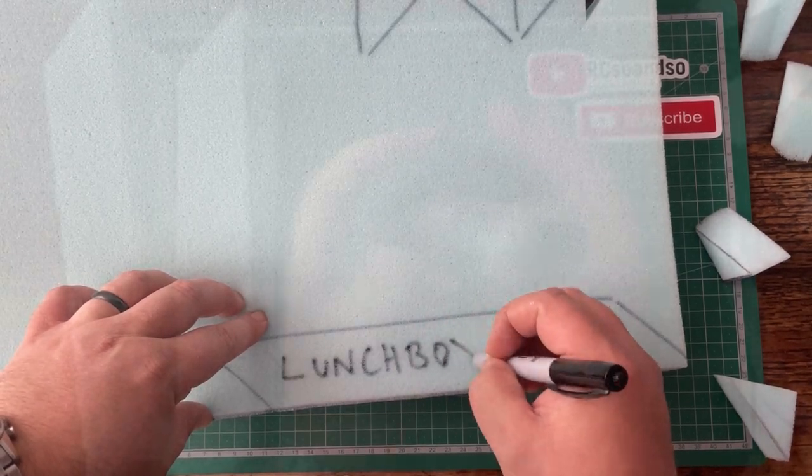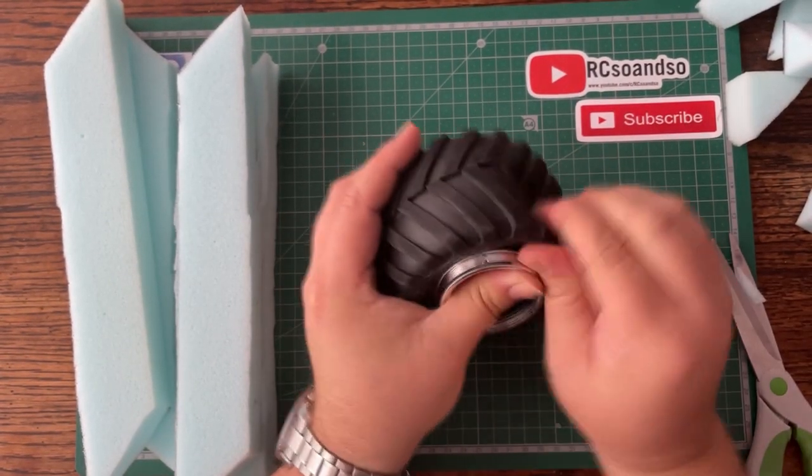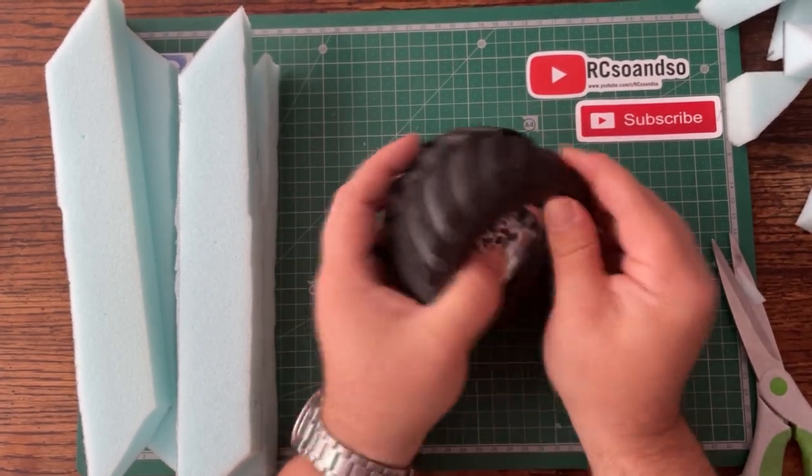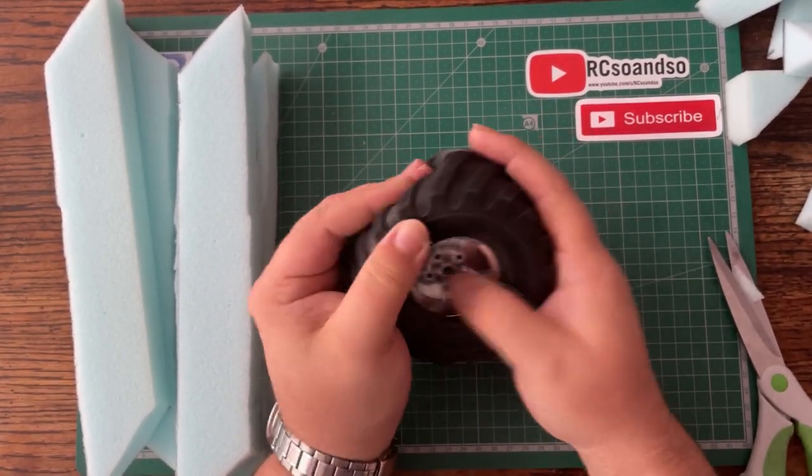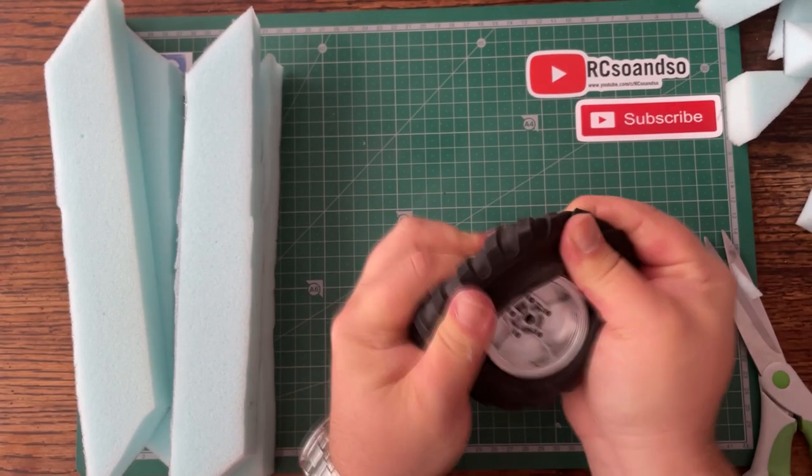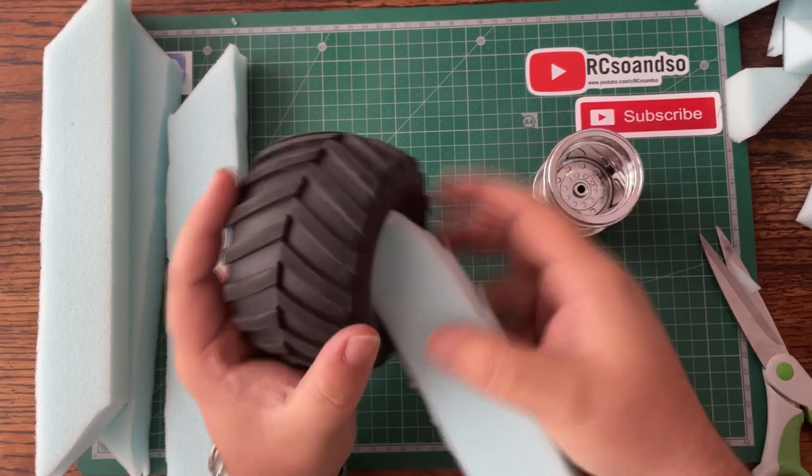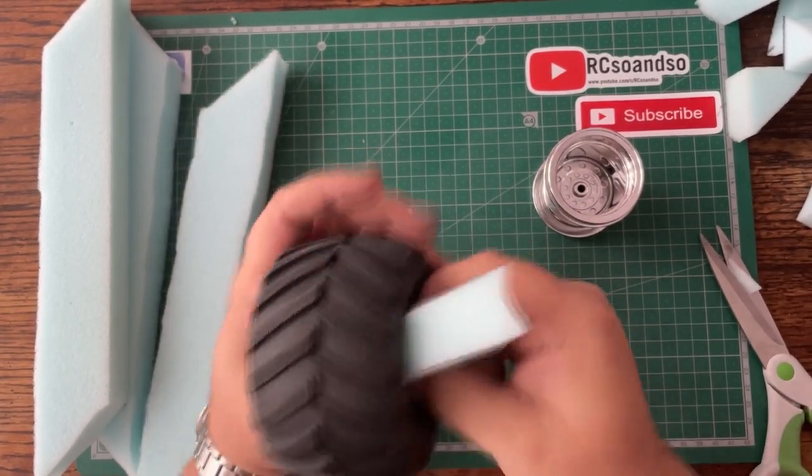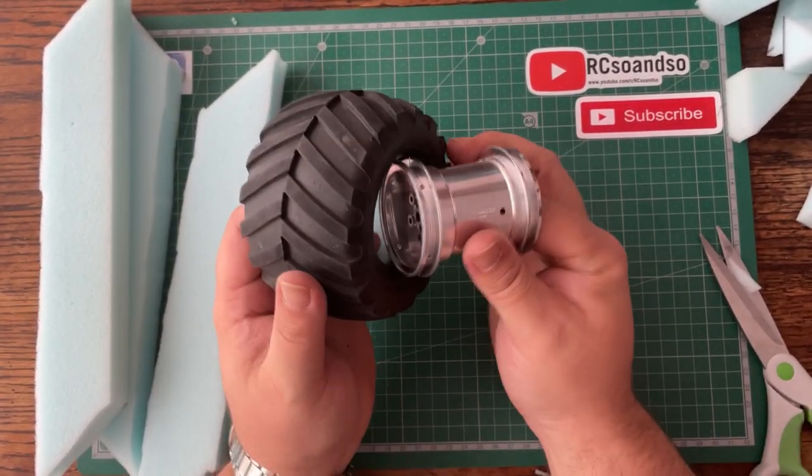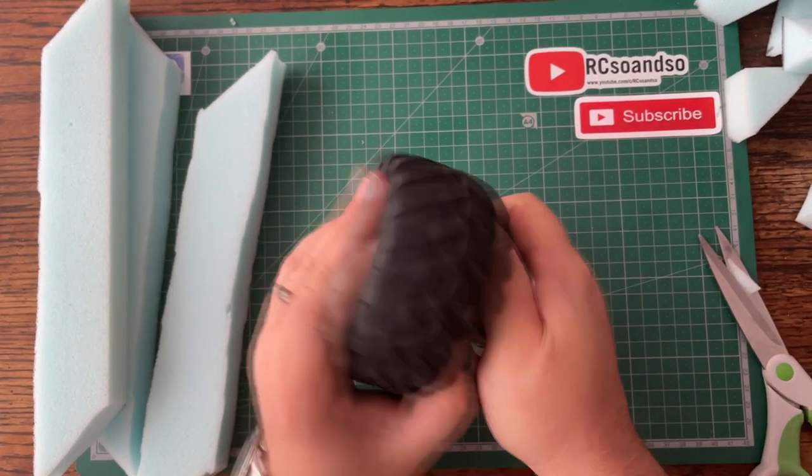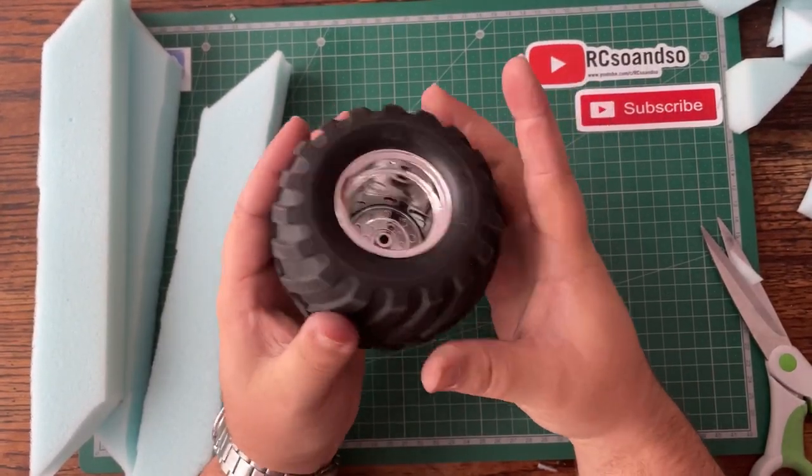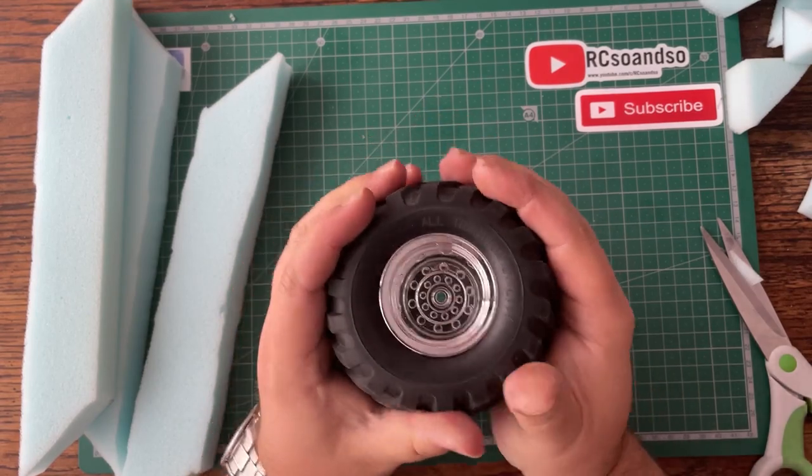I then put a tire on a wheel without the inserts just to test the squishiness without the foam inserts, and it is squishy. Next it's time to stuff the tire with the foam and put on the wheel and again test the squishiness. It was less squishy so I guess that's a good thing.